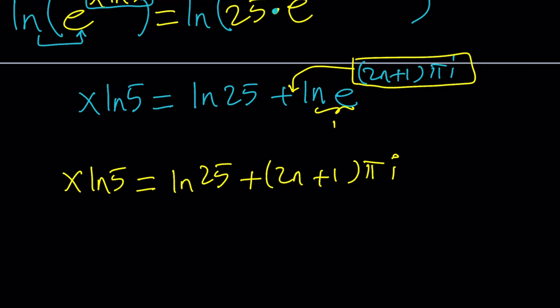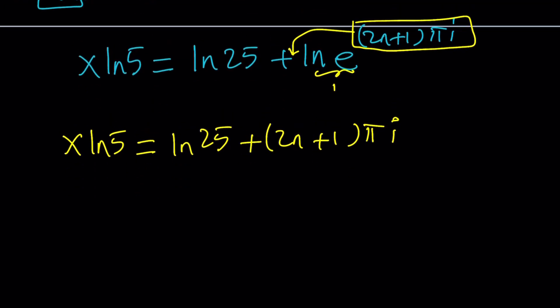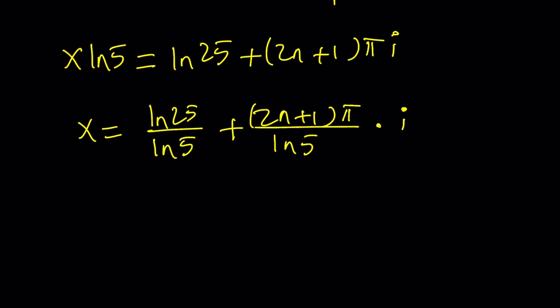Great. We're almost there. But we just need to solve for x, don't we? So let's go ahead and divide everything by ln 5 and then take a look at this expression one more time. So if you divide everything by ln 5, you're going to get ln 25 over ln 5, which we'll simplify next. And then here, I can kind of divide 2n plus 1 pi by ln 5 and then separate the i. So this kind of looks like a plus bi. Remember that name, a plus bi. Great. So this is going to be the answer.